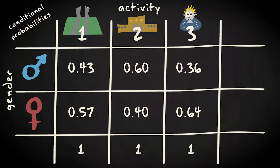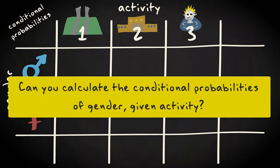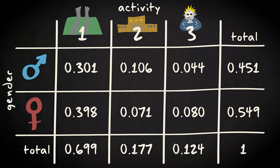Now I have a question for you. Can you calculate the conditional probabilities of gender given activity? This is the original data, which provides you with required information.